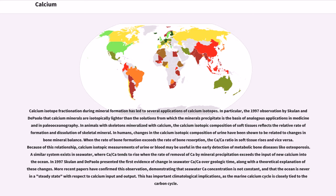Calcium isotope fractionation during mineral formation has led to several applications of calcium isotopes. In particular, the 1997 observation by Skulan and DePaolo that calcium minerals are isotopically lighter than the solutions from which the minerals precipitate is the basis of analogous applications in medicine and in paleoceanography. In animals with skeletons mineralized with calcium, the calcium isotopic composition of soft tissues reflects the relative rate of formation and dissolution of skeletal mineral. In humans, changes in the calcium isotopic composition of urine have been shown to be related to changes in bone mineral balance. When the rate of bone formation exceeds the rate of bone resorption, the ⁴⁴Ca/⁴⁰Ca ratio in soft tissue rises and vice versa.